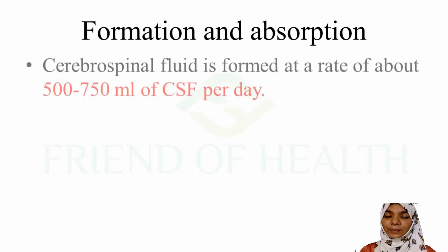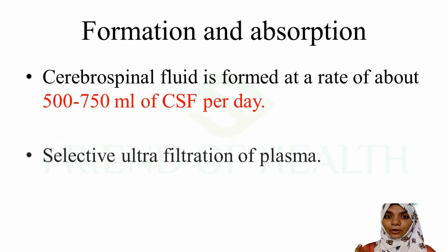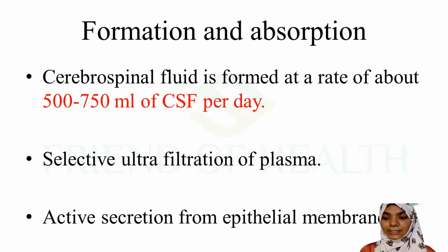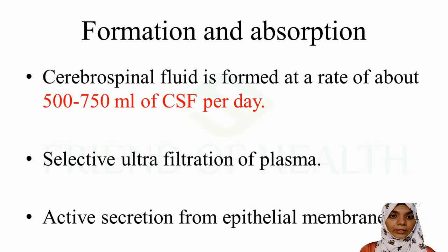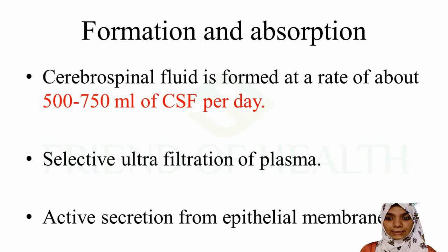Cerebrospinal fluid is formed at the rate of about 500 to 750 ml per day. It is formed by selective ultrafiltration of plasma and also by active secretion from the epithelial cell membrane. The entire cranial cavity along with the brain and spinal cord has a capacity of about 1500 to 1700 ml, of which 150 ml is covered by CSF.